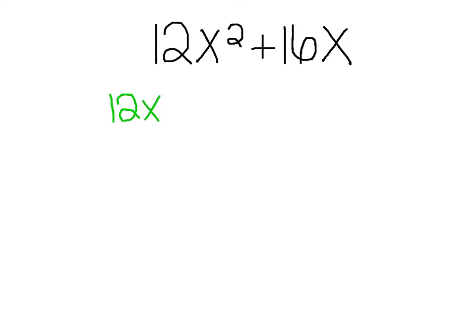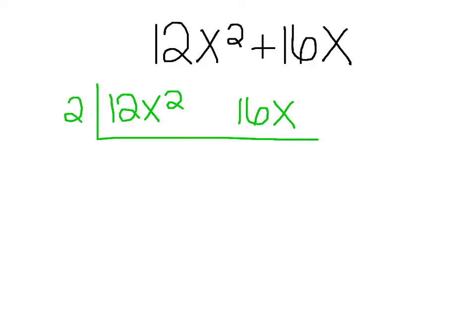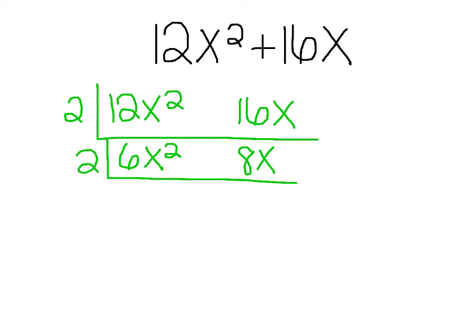I have 12x² and 16x. I'll start with the numbers: 12 and 16. Starting with 2 — 12 divided by 2 is 6, carry down the x². 2 goes into 16 eight times, carry down the x. We see 2 works again: 6 divided by 2 is 3, carry down x²; 8 divided by 2 is 4, carry down x. Now I have 3 and 4 — that's a prime, so 3 doesn't go into 4, and I'm done with the numbers.